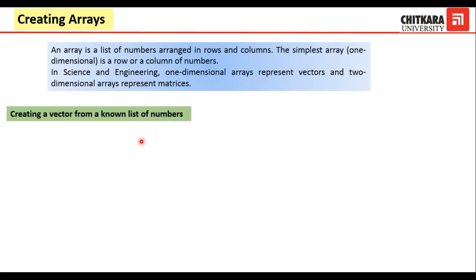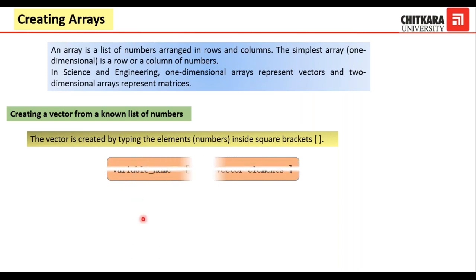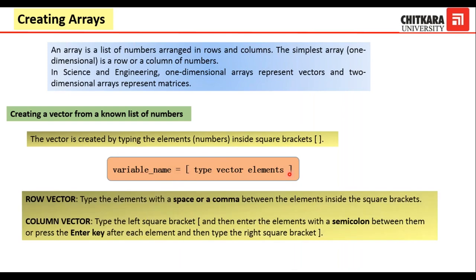How do we create a vector from a known list of numbers? The vector is created by typing the elements inside square brackets. So we write a variable name, put it equal to, and then insert the numbers within the square brackets. If we are talking about a one-dimensional array — a row vector or a column vector — let's talk about the row vectors first.